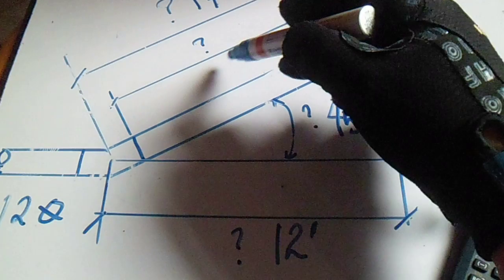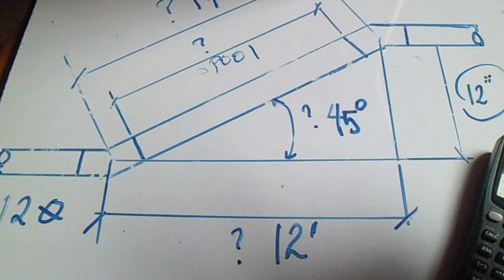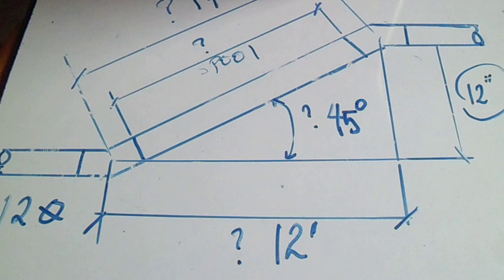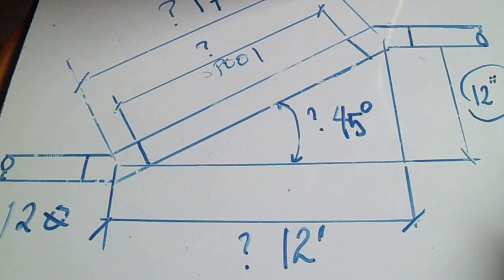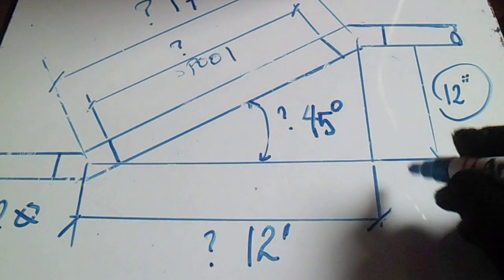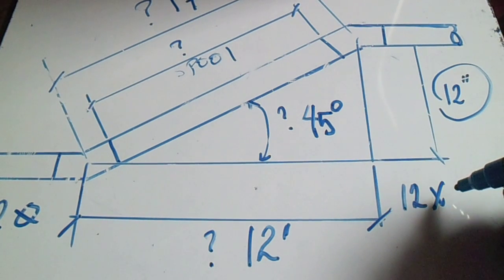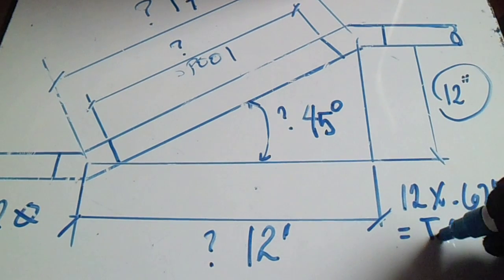Now we will find this spool. To find this spool, you must know the formula of 45 degrees takeoff. First we will find the takeoff of 45. What is the takeoff of 45 degrees in our 12 inch diameter? We will multiply the diameter by 0.625 to get takeoff.